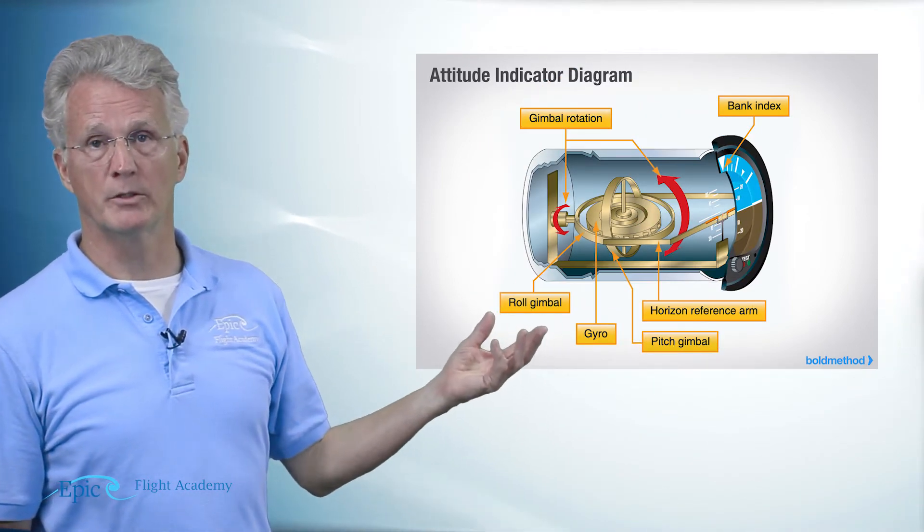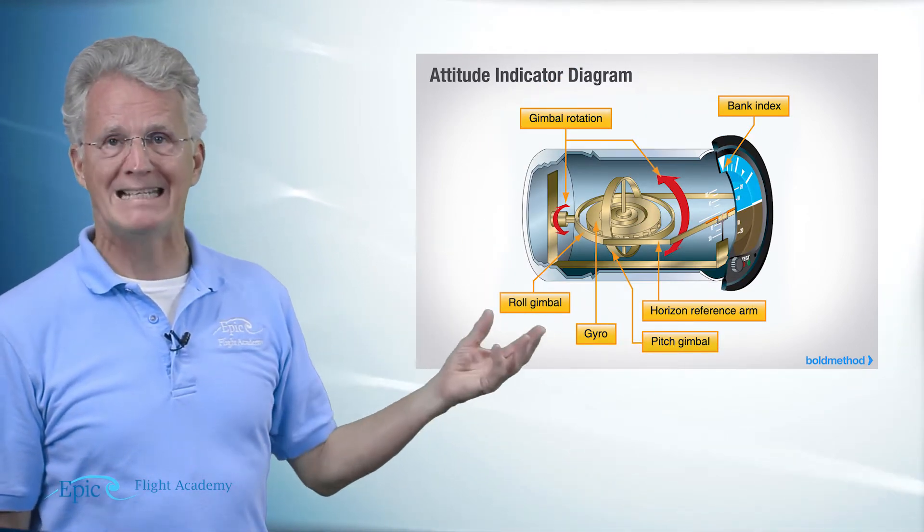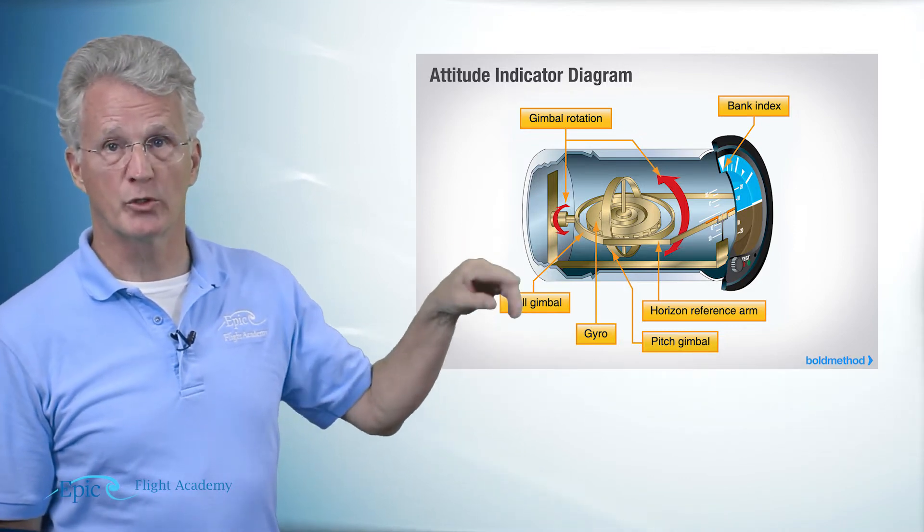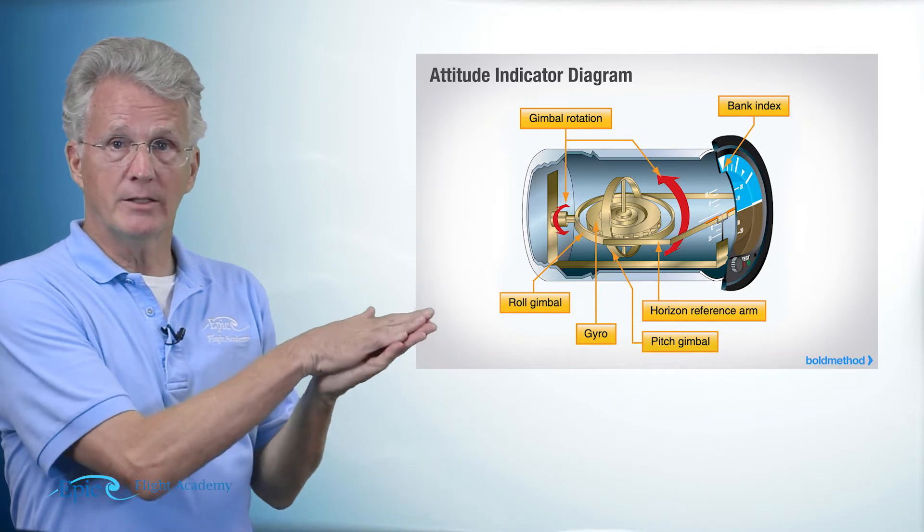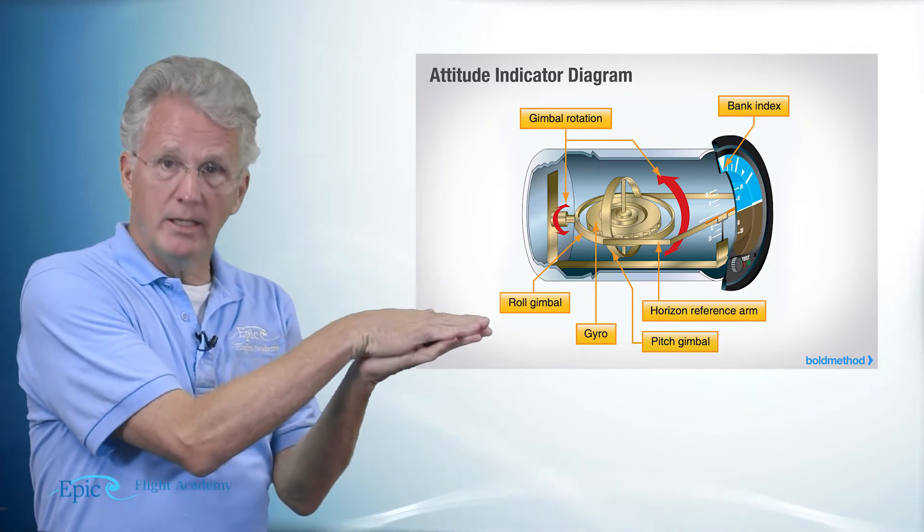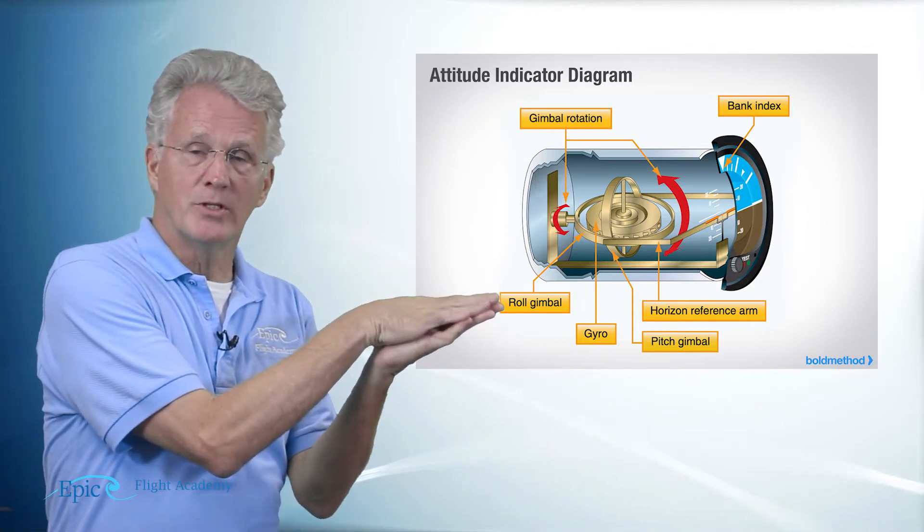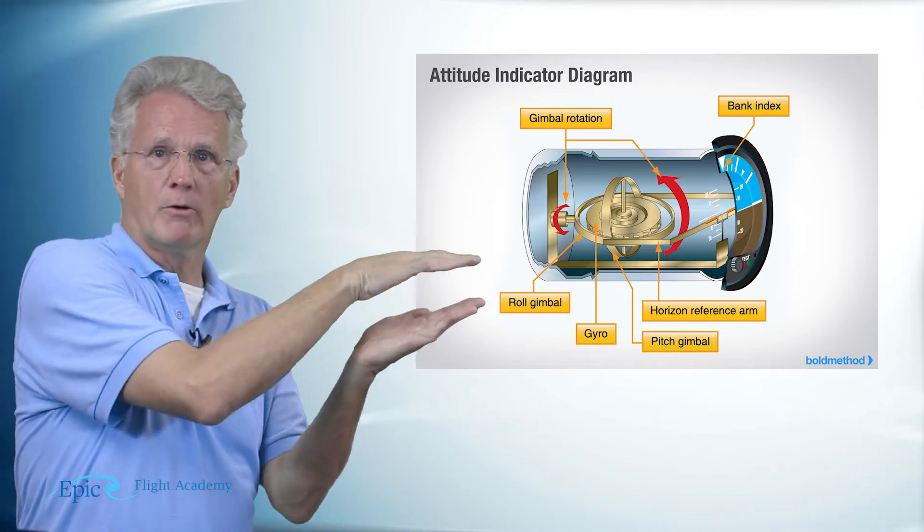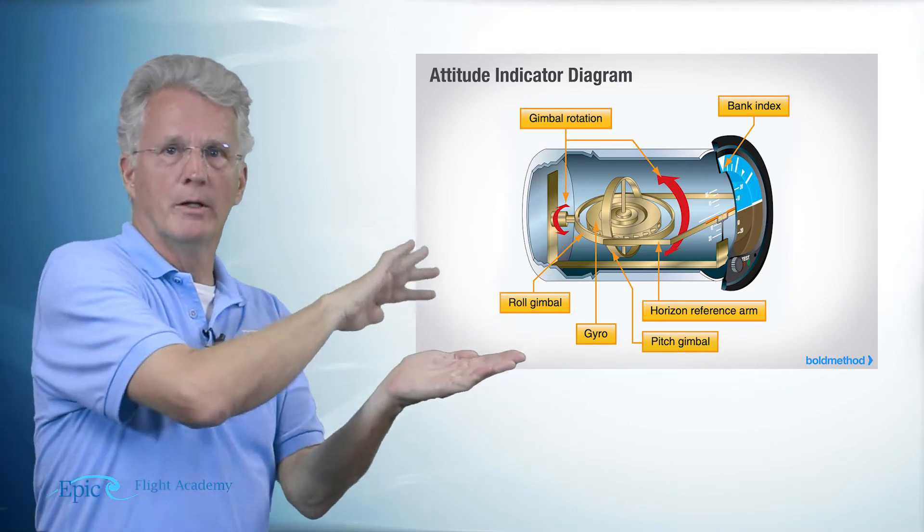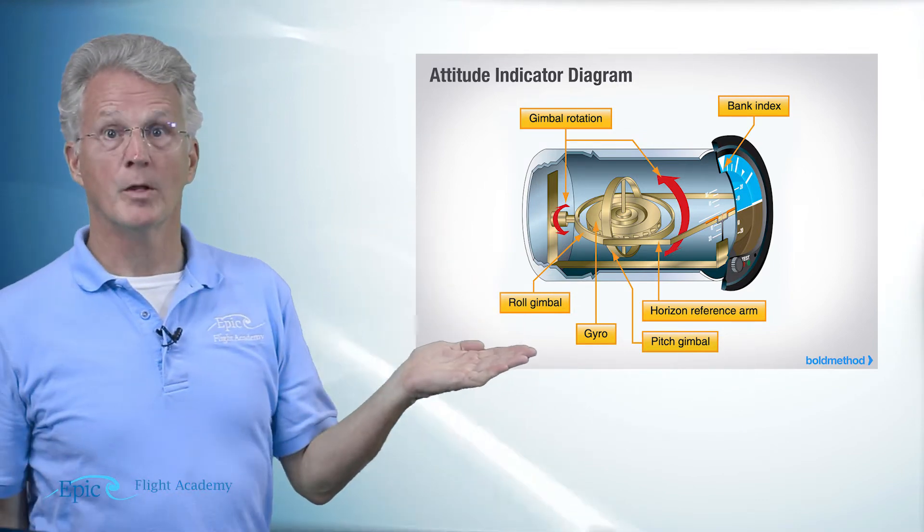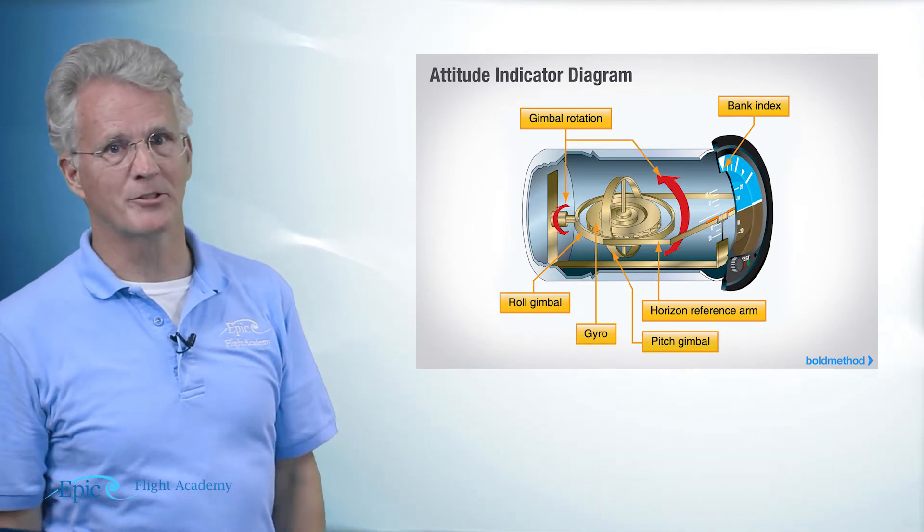Now this rapidly spinning gyro maintains its rigidity because there are three gimbals around this gyro that let it stay in space in its same position while the aircraft literally moves around that gyro. Pretty interesting, right?